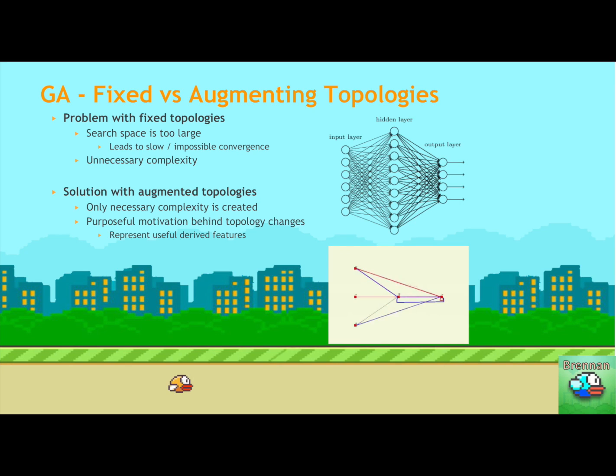So NEAT's approach is to start off with the most simplest neural net possible, just your input layer and a single output neuron or output layer. And the idea is that you only would create additional connections or additional neurons if the need arises. So anytime you create a new gene or a new neuron, if it survives selection, meaning if it continues on, that means it actually was representing an underlying truth or an underlying derived feature that needed to be there.